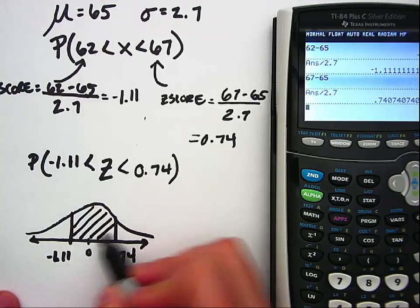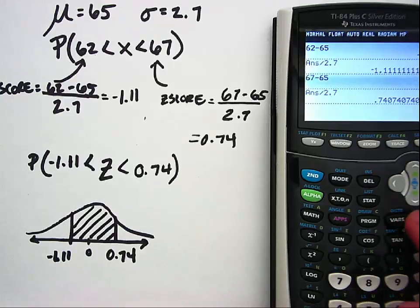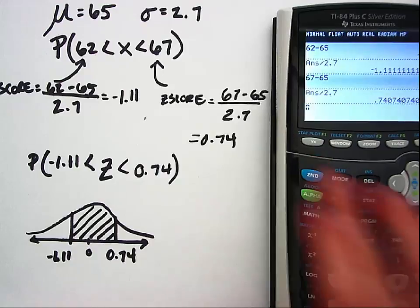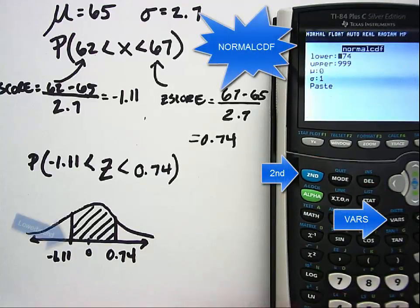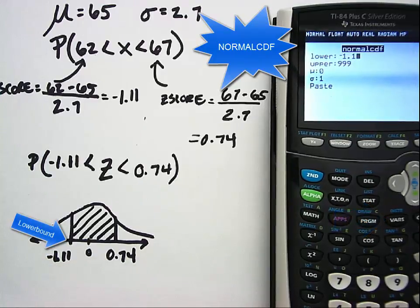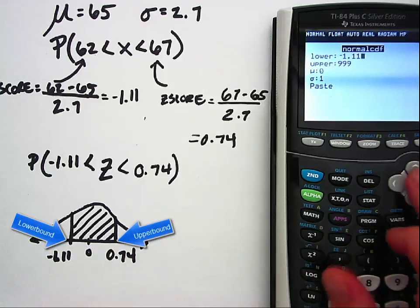So remember when you're using the calculator to find these probabilities, you're going to go second and then vars and you do normal cdf. And it wants the lower bound or where the highlighting starts, so here that would be negative 1.11, and then it wants the upper bound or where the highlighting ends, so here that's 0.74.